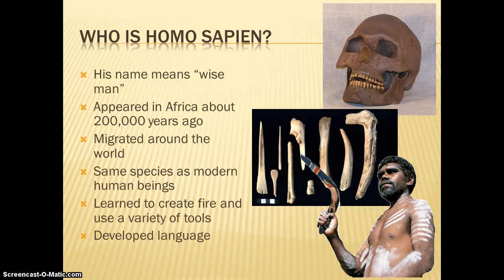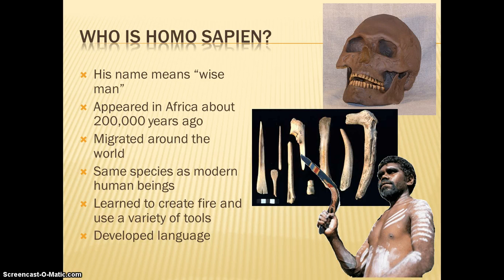Homo sapiens. This is the group that all human beings today belong to. We are the same species — we are all Homo sapiens. His name means wise man. He appeared in Africa about 200,000 years ago. Now, 200,000 years ago is a long time, but he's actually the new kid on the block in terms of hominids. He migrated all around the world — he is the one who made it possible for all of these different nationalities to be around today, because as a hominid he migrated to every region of the earth, except Antarctica, because obviously it's far too cold to live there. Not only did he learn how to harness fire, he actually learned how to create it.